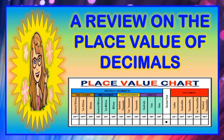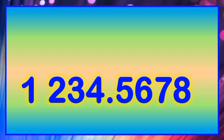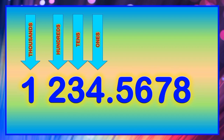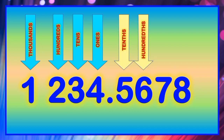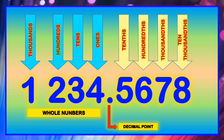Let's have first a review on the place value of decimals. The given decimal number is 1,234 and 5,678 ten-thousandths. Let us identify the place value of each digit from the given number, starting from the digit 1. The digits 5, 6, 7, and 8 represent the decimal part.